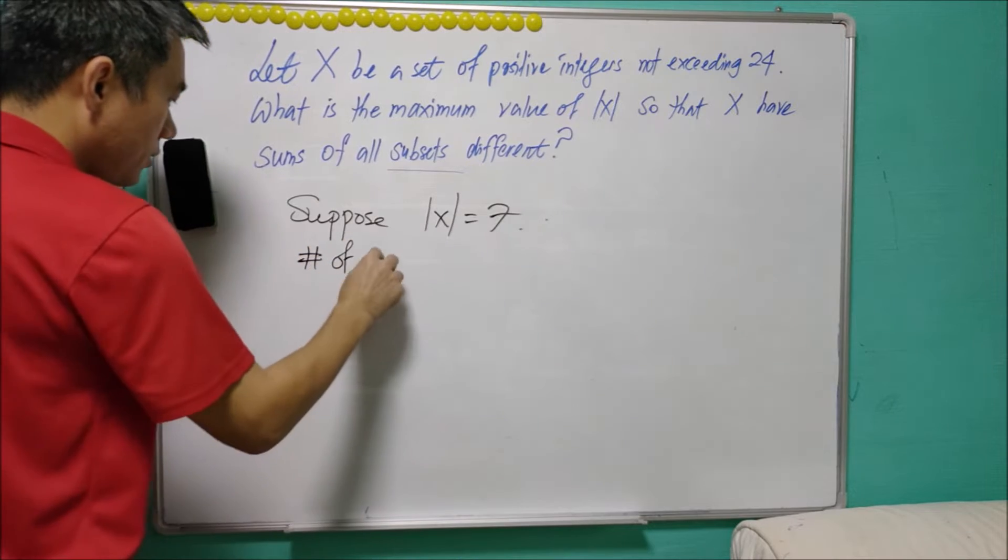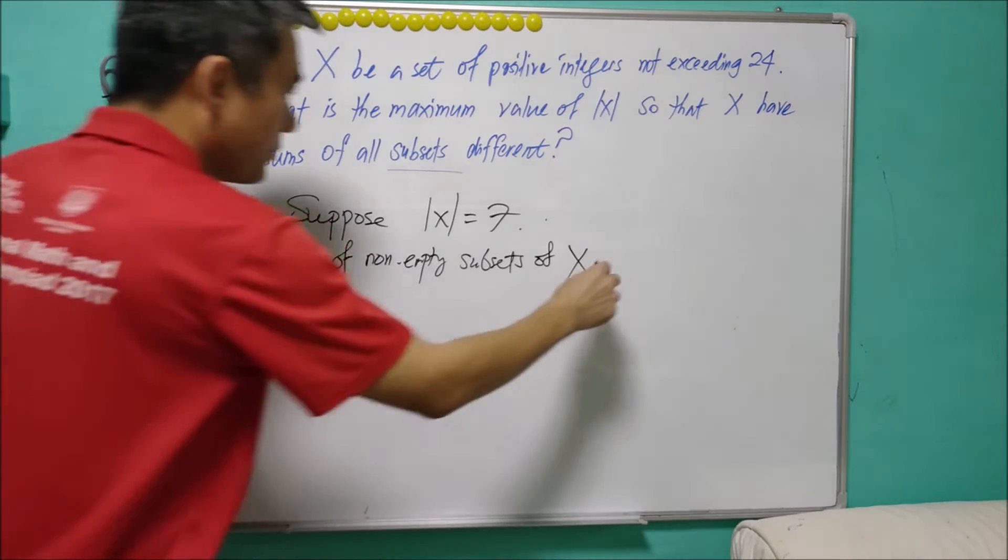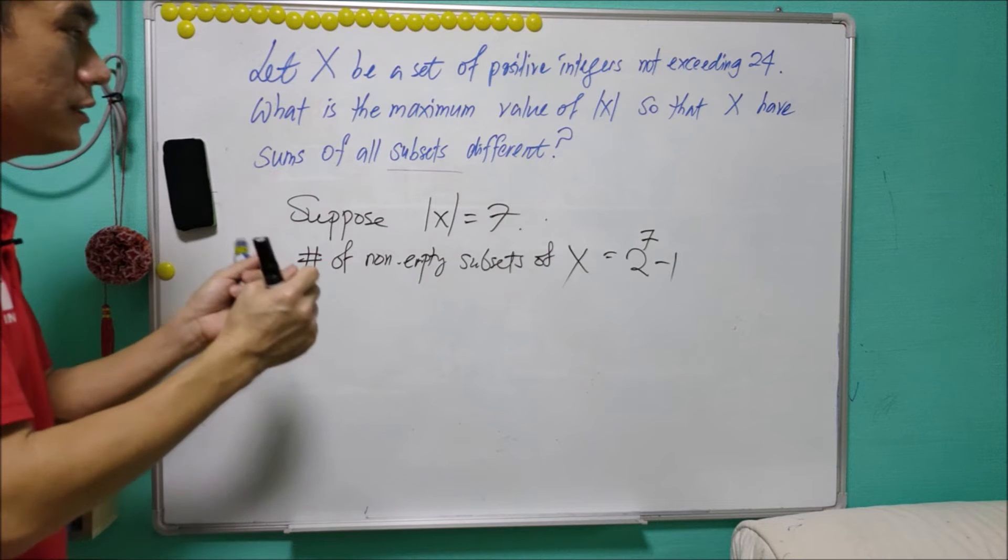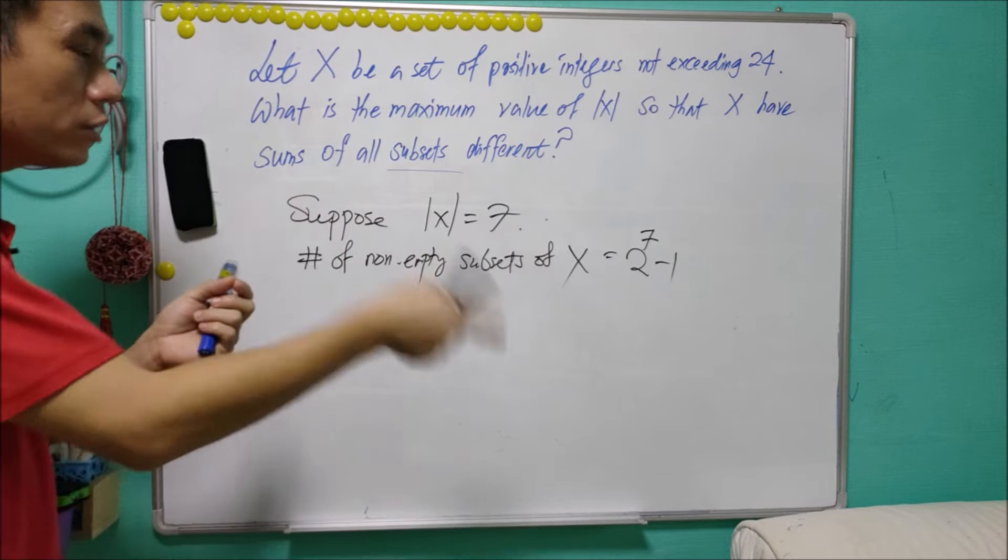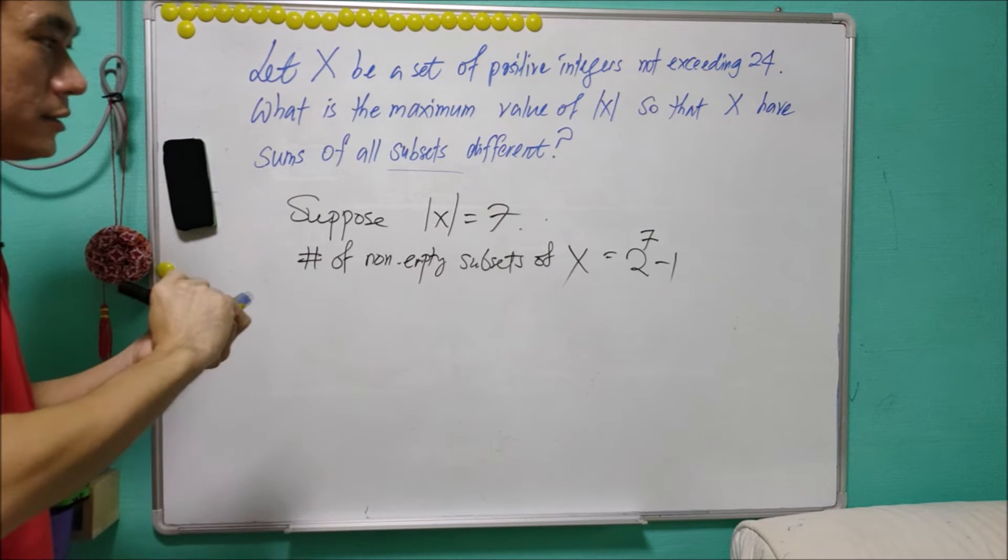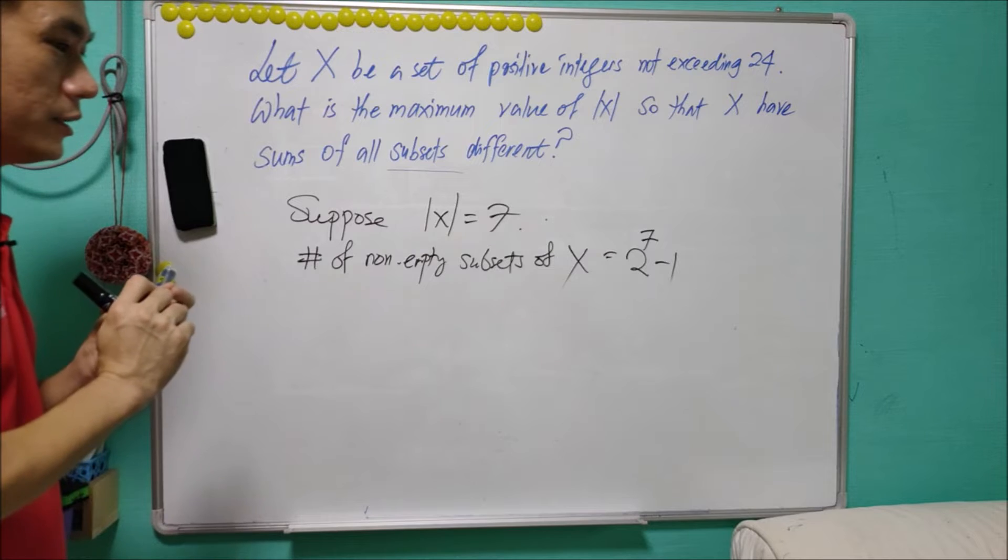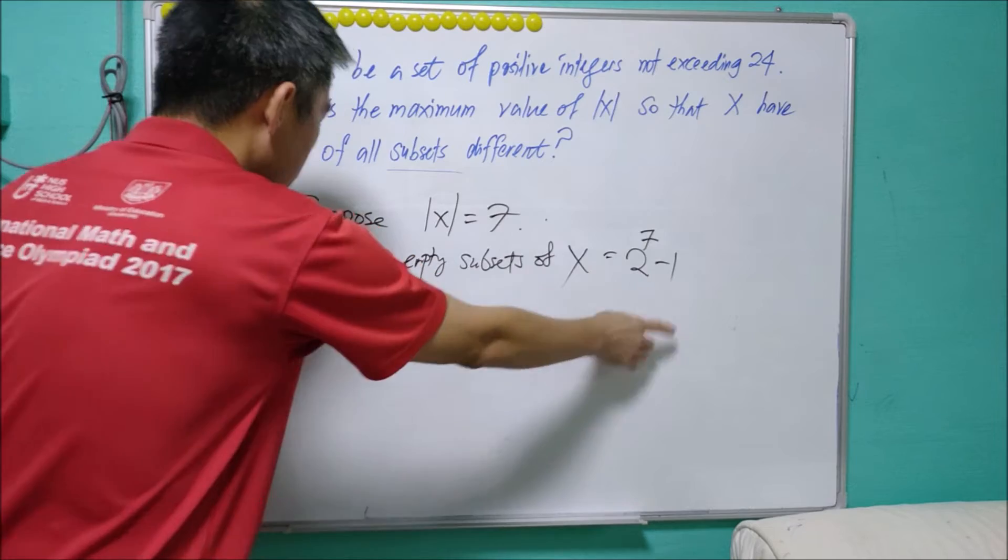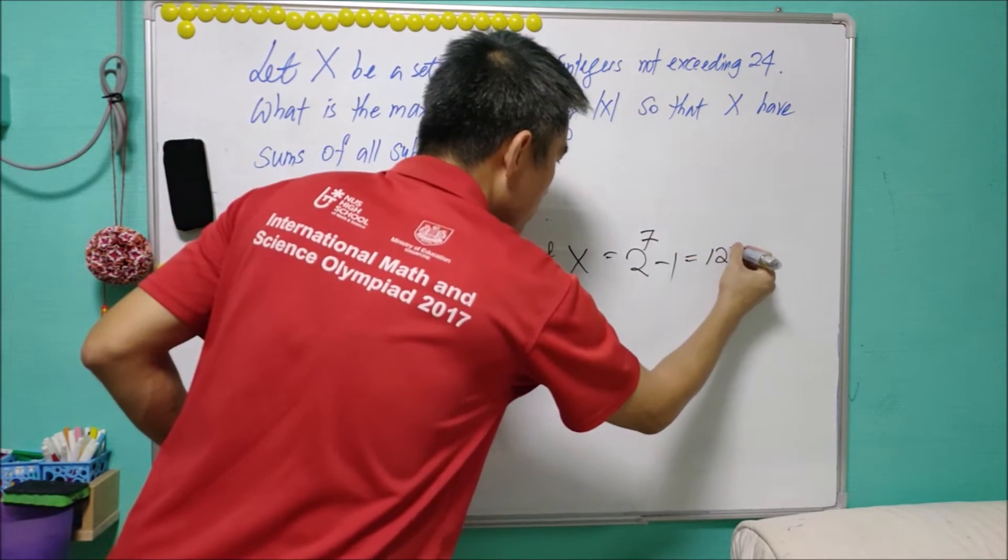Number of non-empty subsets of X will be equal to 2^7 - 1. Because for each element inside X, it either belongs to a particular subset or does not belong to that particular subset. So, for each element, it is either in or out, and it has two ways. Since there are 7 elements inside X, it will be 2^7. But we have to rule out one particular case because we exclude the empty set. And this value is equal to 127.